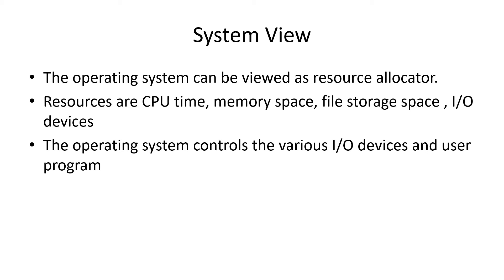System view — the operating system can be viewed as a resource allocator. A computer system has many resources that may be required to solve a problem. Resources means CPU time, memory space, file storage space, I/O devices and so on. The operating system acts as a manager of these resources. There may be conflicting requests for resources. The OS decides how to allocate them to specific programs and users so that it can operate the computer system efficiently and fairly. The OS controls the various I/O devices and user programs. For this purpose the OS uses a control program which manages the execution of user programs to prevent errors and improper use of the computer.